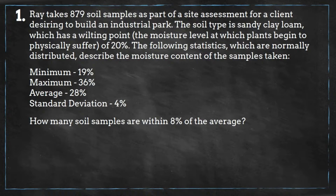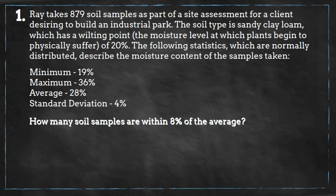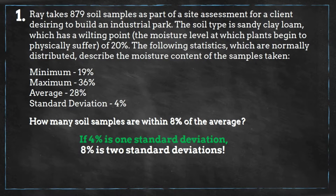Let's see if any of these facts can help us solve this problem. The standard deviation is 4% in this data set, and the question is asking how many of the samples are within 8% of the average. Can we make any connections between the standard deviation and the question being asked? Sure — 8% is two times more than 4%, so if 4% is one standard deviation, then 8% is two standard deviations.